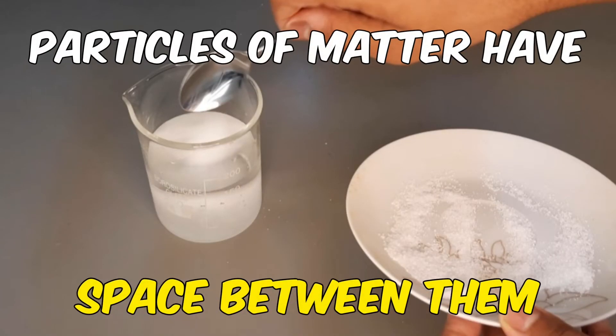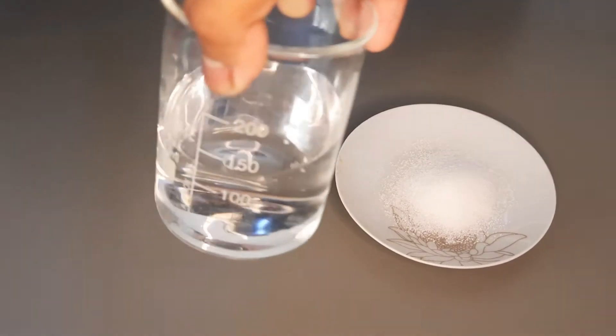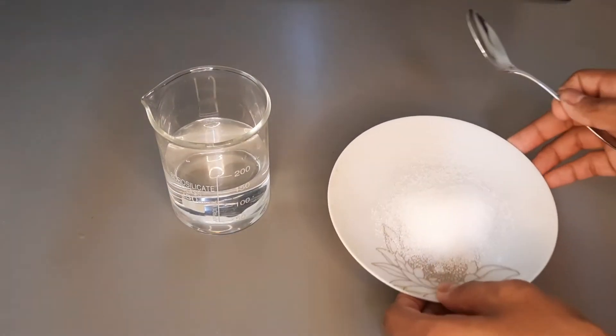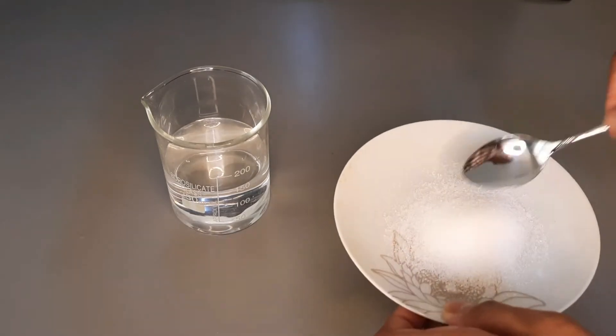Particles of matter have space between them. Take 150 ml of water. A sugar grain is made up of large number of tiny sugar molecules.